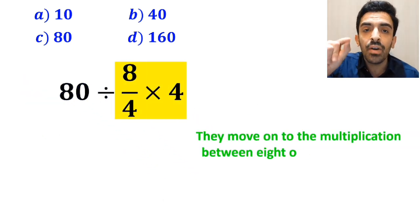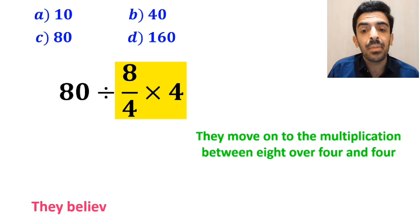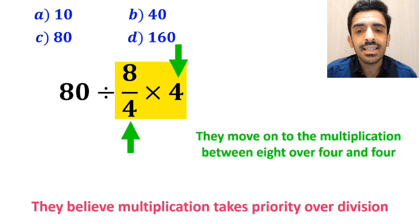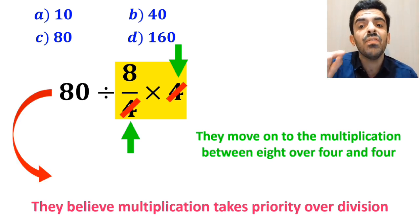As you can see in the image, they simplify the number 4 with the 4 in the denominator and instead of the original expression they write 80 divided by 8.